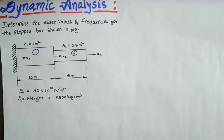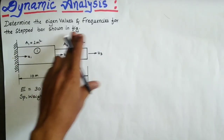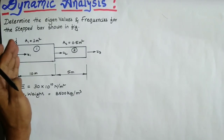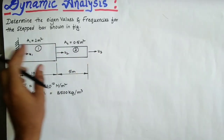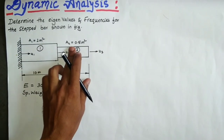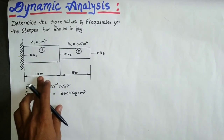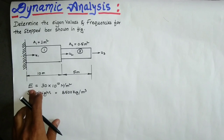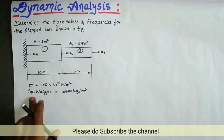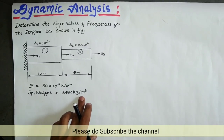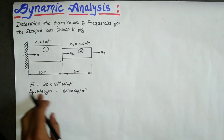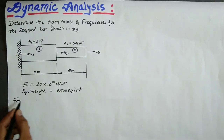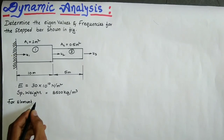Hello friends, welcome to another problem on dynamic analysis. Here we determine the eigenvalues and frequency for a stepped bar shown in the figure. The stepped bar has one end fixed, with displacements at each node u1, u2, u3. The area for element 1 is 1 square meter, for element 2 is 0.5 square meter, with lengths L1 = 10 m and L2 = 5 m. Young's modulus is 30×10^10 N/m² for both elements, and the density is 8500 kg/m³ for both materials.